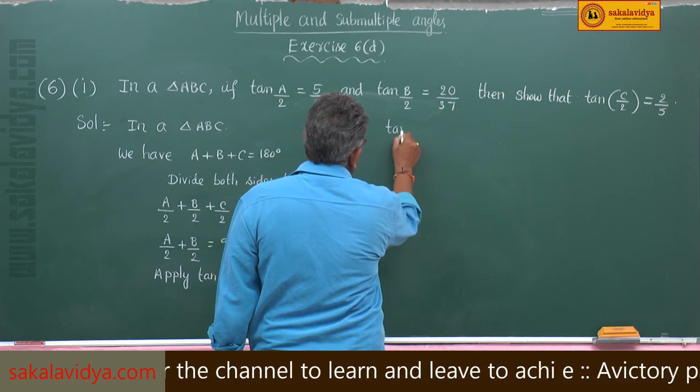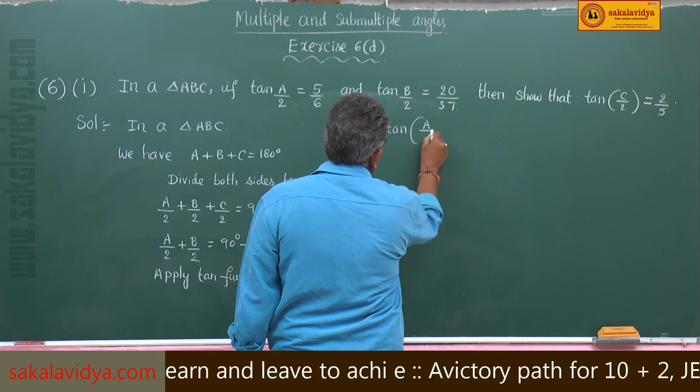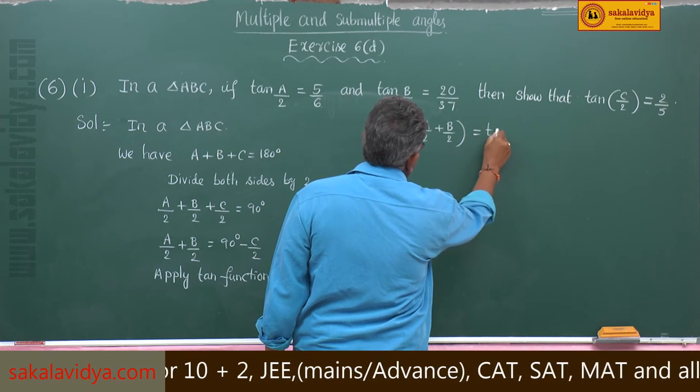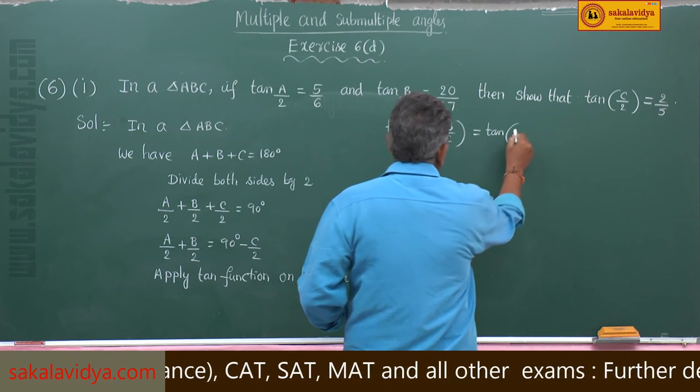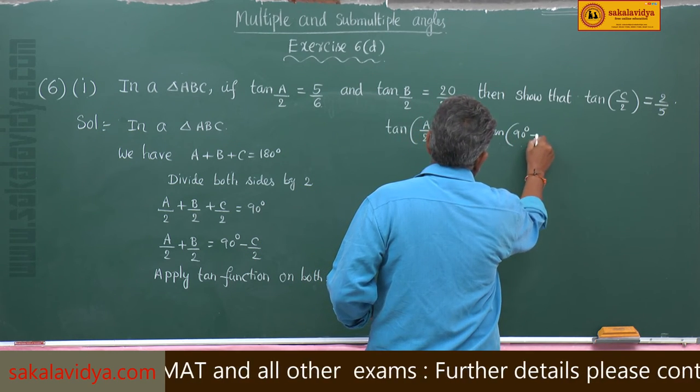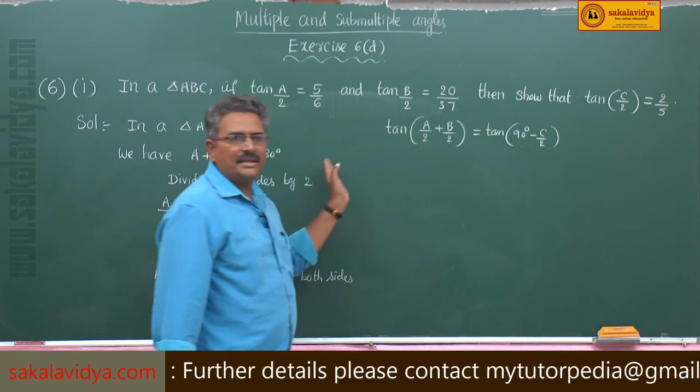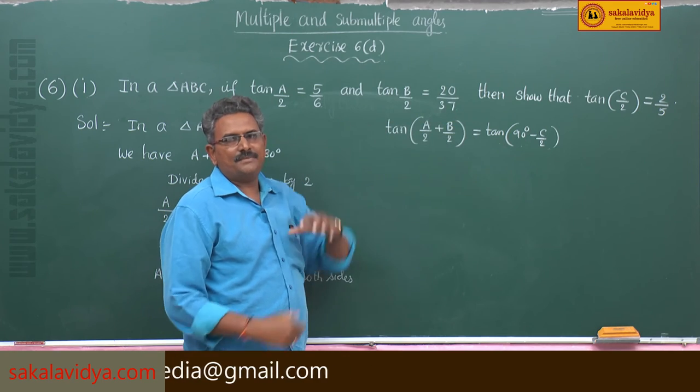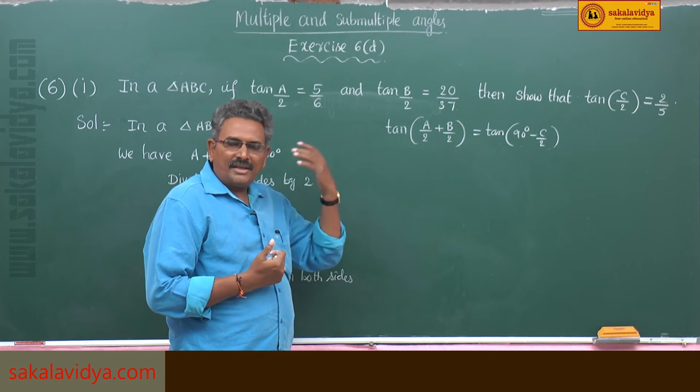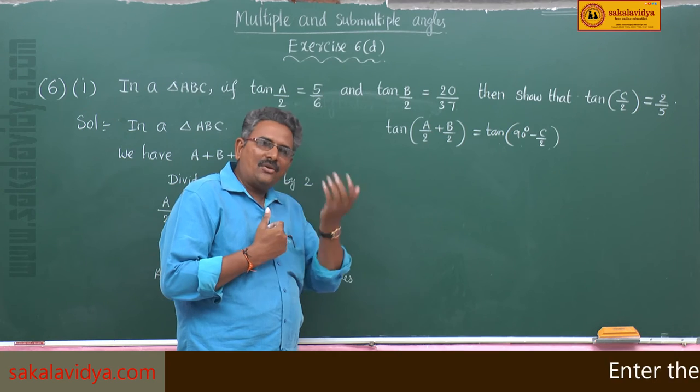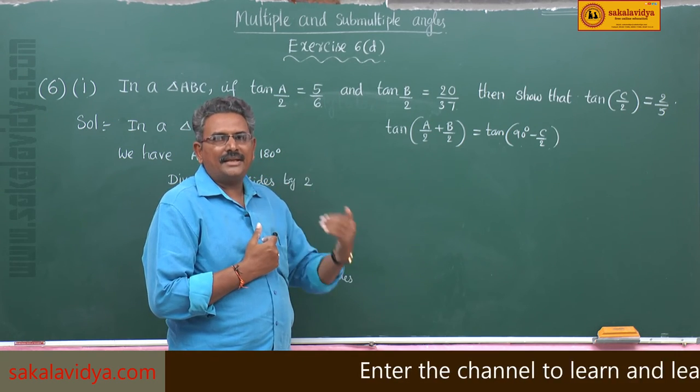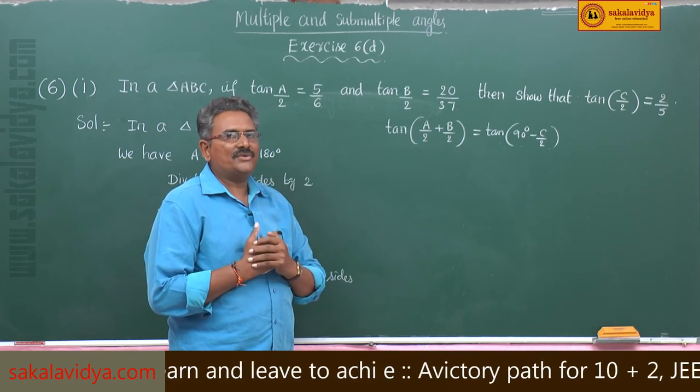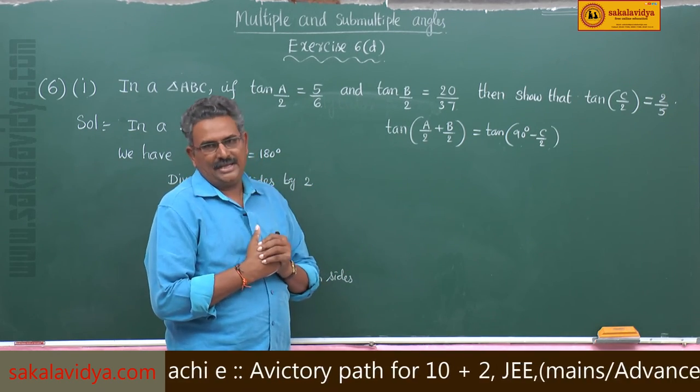We get tan of A by 2 plus B by 2 equal to tan of 90 degrees minus C by 2. See the left hand side, this is in the form of tan of A plus B. We have discussed tan of A plus B is equal to tan A plus tan B by 1 minus tan A tan B.